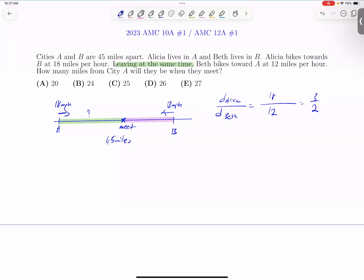If we say that A to midpoint is 3k, then midpoint to B has to be 2k. The total distance is 45, then 3k plus 2k is equal to 45. That makes it 5k equals 45. K is equal to 9 miles.